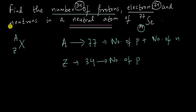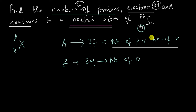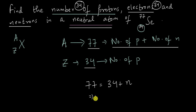Finally, we need to find the number of neutrons. We already know that the number of protons is 34, and the number of protons plus the number of neutrons is 77. So: 77 equals 34 plus the number of neutrons. Therefore, the number of neutrons is 77 minus 34, which equals 43. So we have 43 neutrons.